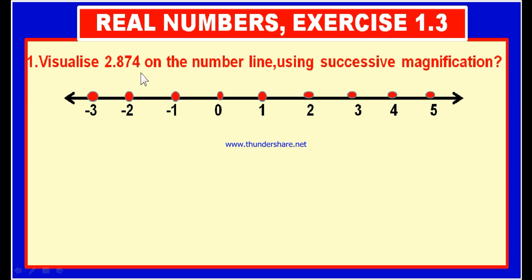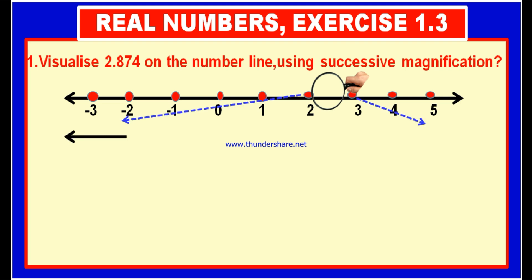2.874 lies between 2 and 3. We know that there are infinite number of points between 2 and 3. Let us magnify the part of the line segment that lies between 2 and 3, because the given number 2.874 lies between 2 and 3. Therefore, let us take the line segment between 2 and 3 and magnify it. This is the magnification glass — we are magnifying the part of 2 and 3 like a straight line again.